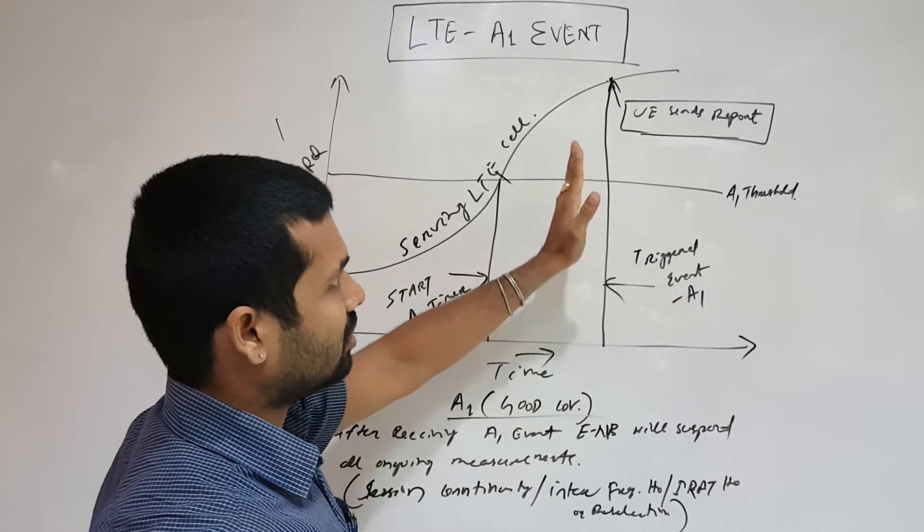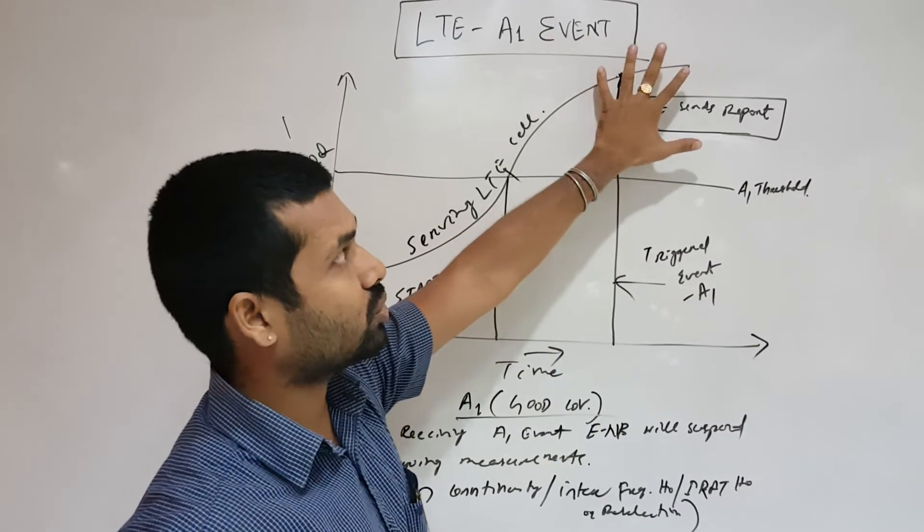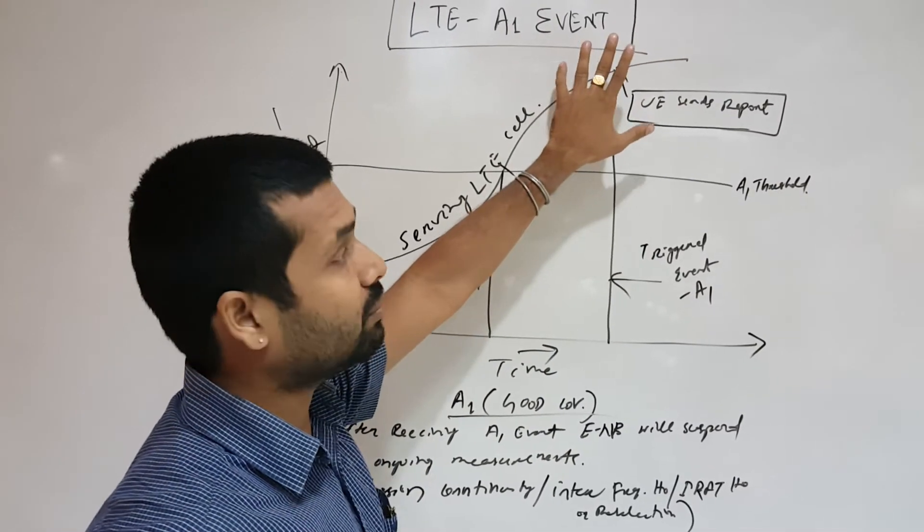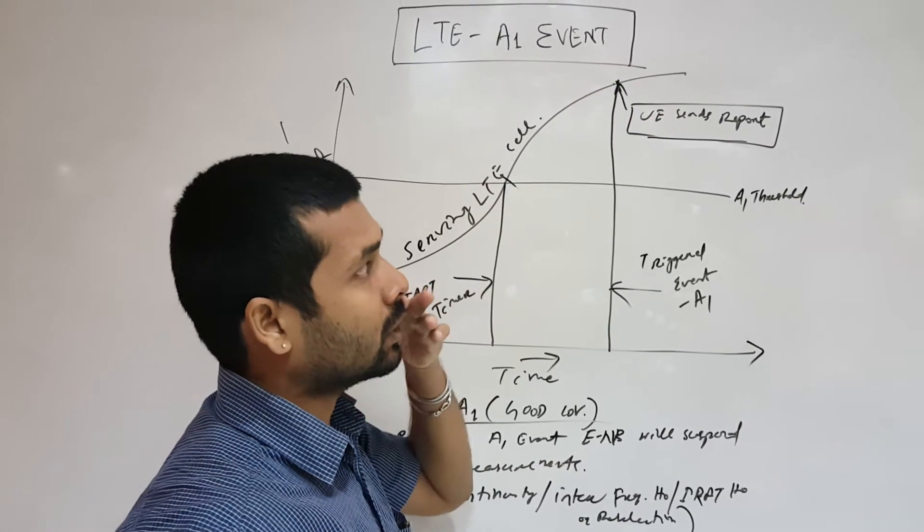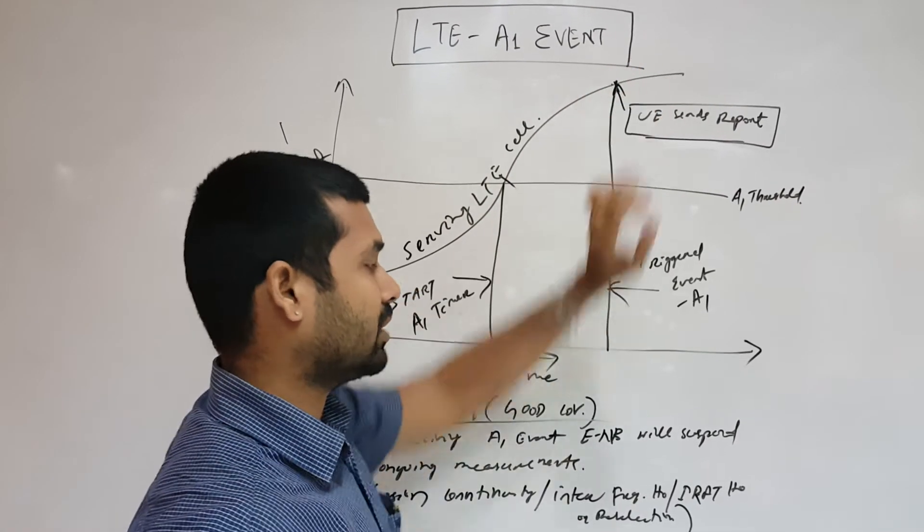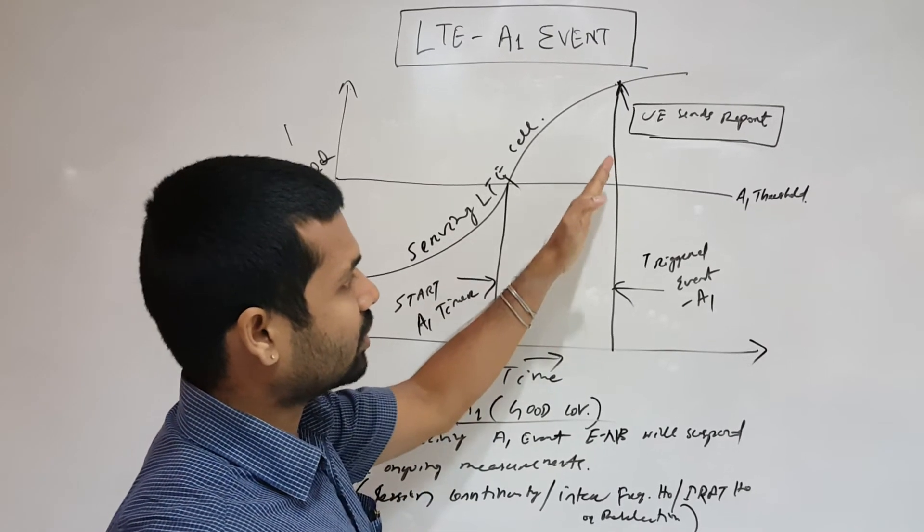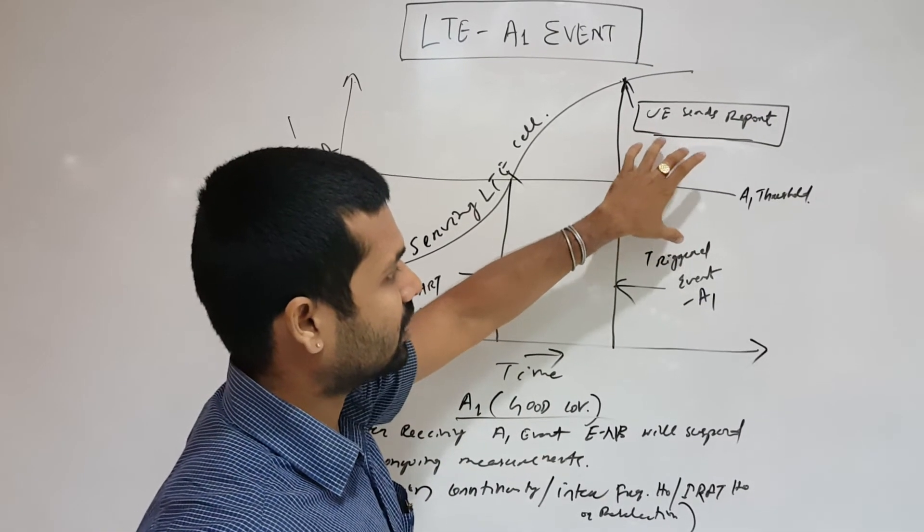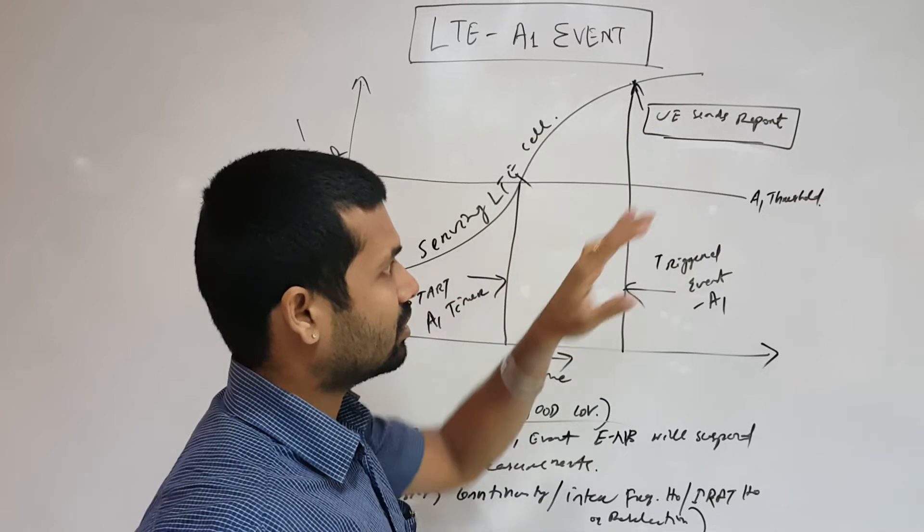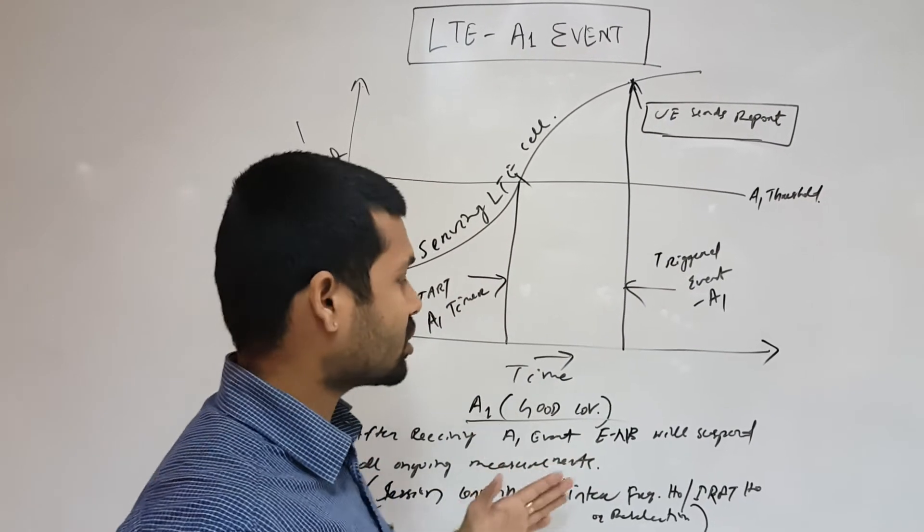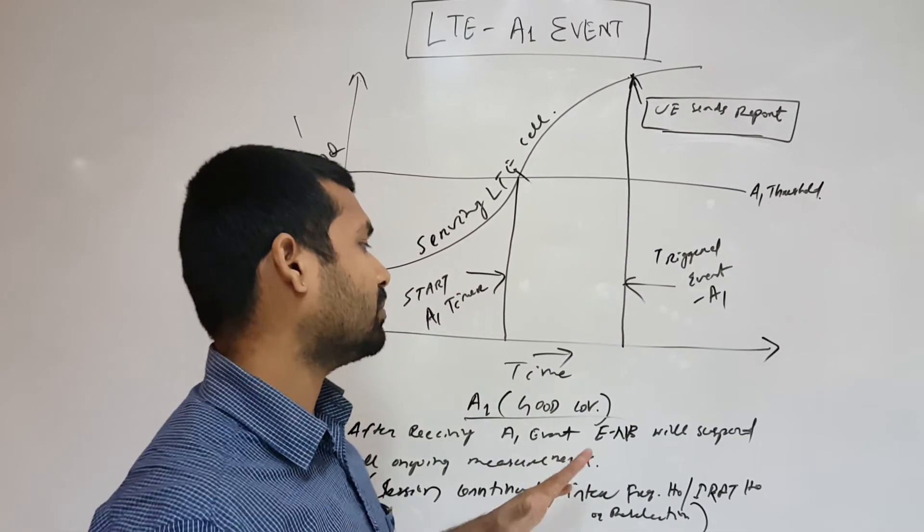That yes, now I am in a good coverage zone, so no need of measurement and reselection or handover procedure or anything. So when we report the A1 event, the eNodeB immediately stops all the measurement and sessions.